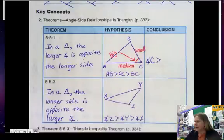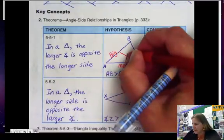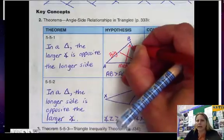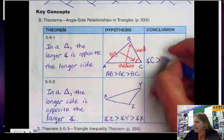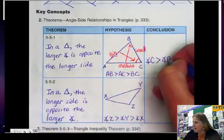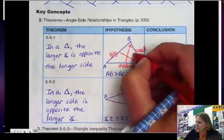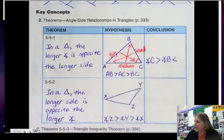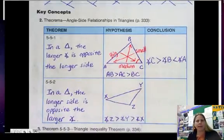The medium side is across from the medium-sized angle. So angle C is bigger than angle B, which is bigger than angle A.